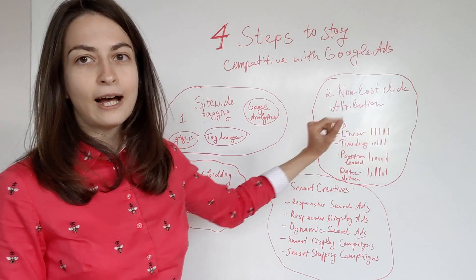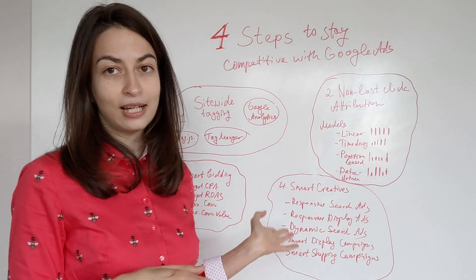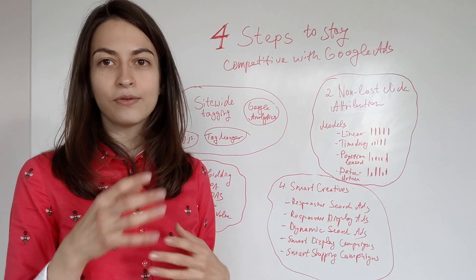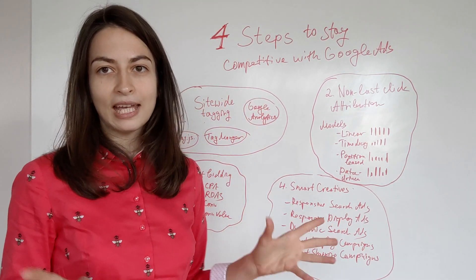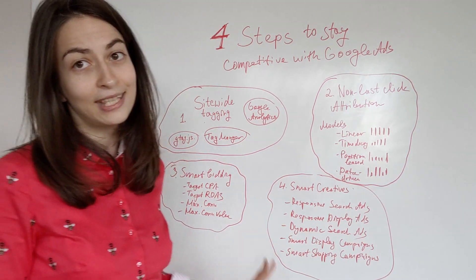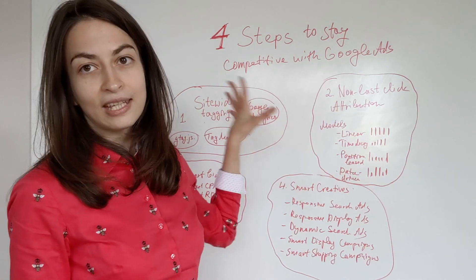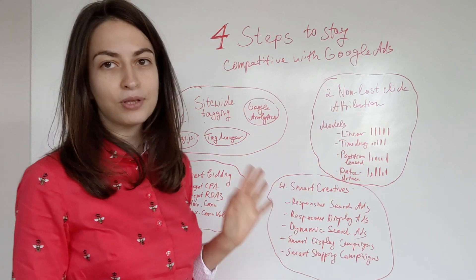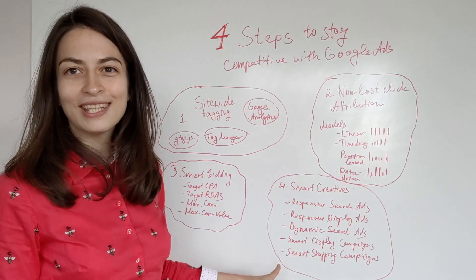Step one and step two first, because they need some time to learn—two weeks for these smart bidding strategies to learn. Literally, the algorithm is testing, it's trying, there are fluctuations, so you should not make any changes during this time period. Otherwise, you will not see the desired effect. So it's really important that you have your attribution, your site-wide tagging done before you start smart bidding. Absolutely crucial.